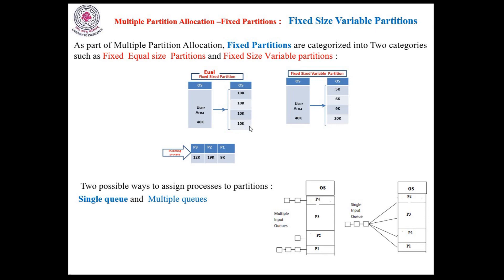Suppose I select the equal fixed sized partitions and try to load the processes. P1's requirement is 9K, which is less than or equal to the 10K partition size, so sufficient memory is available and P1 can be loaded. For P2, the requirement is 19K, but each partition size is only 10K, so P2 cannot be loaded into this user area. P3's requirement is 12K, and P3 also cannot be loaded. Even though sufficient memory is available overall, it is not available in a contiguous manner. So I am able to load only one process with the help of equal fixed sized partitions.